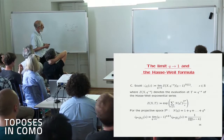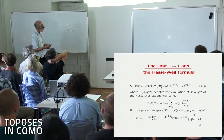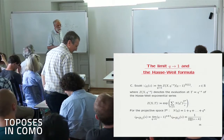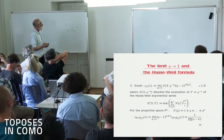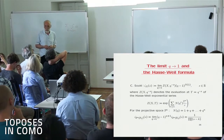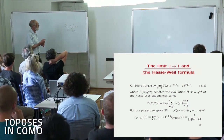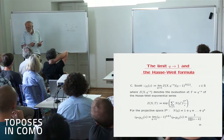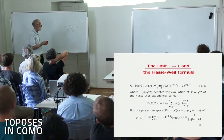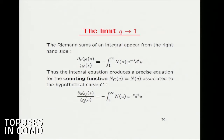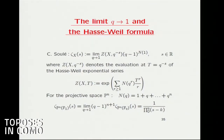So he computed this. Then with Katia, we said: if there is a geometric object that underlies the Riemann zeta function, it should be such that when you compute this formula, you get the complete Riemann zeta function, including the gamma factor at infinity. But we had a problem: in the Soulé approach, when you write (q−1)^{n(1)}, n(1) is the Euler characteristic of the variety. But if you think of the underlying geometric object for the Riemann zeta function, it should have h^0 and h^2 which are one-dimensional, but h^1 which is infinite-dimensional. So the Euler characteristic should be minus infinity, and this formula didn't make sense.